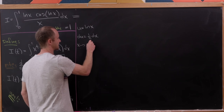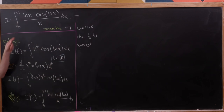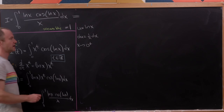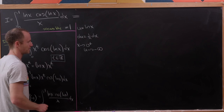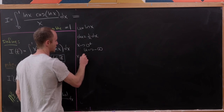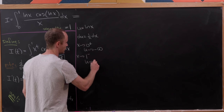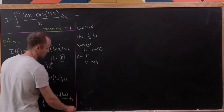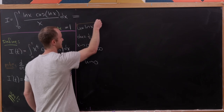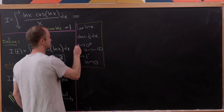As x goes to 0 from above, which is what's happening since our interval is from 0 to 1, u approaches minus infinity. And as x approaches 1, u approaches 0, because the natural log of 1 is 0. That's all the data we need for our u-substitution setup.